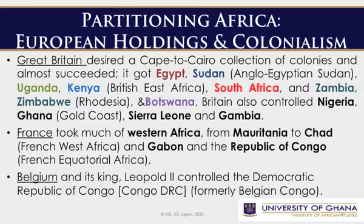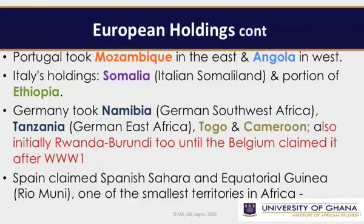France took much of Western Africa, from Mauritania to Chad — previously known as French West Africa — and Gabon and the Republic of Congo, also known as French Equatorial Africa. Belgium and its king, Leopold II, controlled the Democratic Republic of Congo, formerly the Belgian Congo. The Portuguese took Mozambique in the east and Angola in the west. Italy's holdings included Somalia — previously known as Italian Somaliland — and a portion of Ethiopia. Germany took Namibia, Tanzania, Togo, and Cameroon. Initially the Germans also took Rwanda and Burundi, until the Belgians claimed them after World War I.